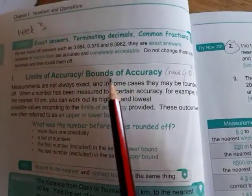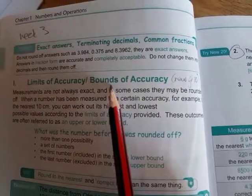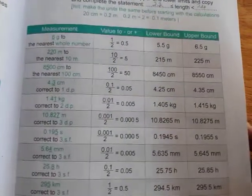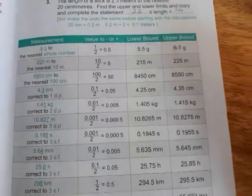Remember, when we work with limits of accuracy, the numbers that you are given are already rounded numbers. So when you go and look on page 25 in your textbook, you will find this table.